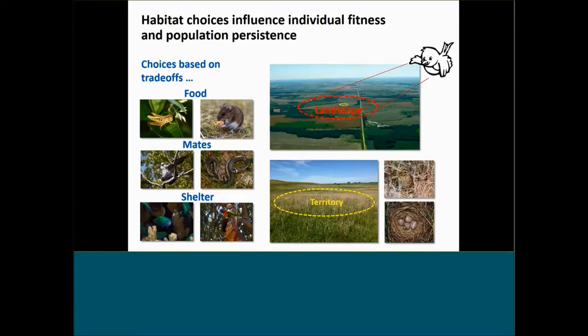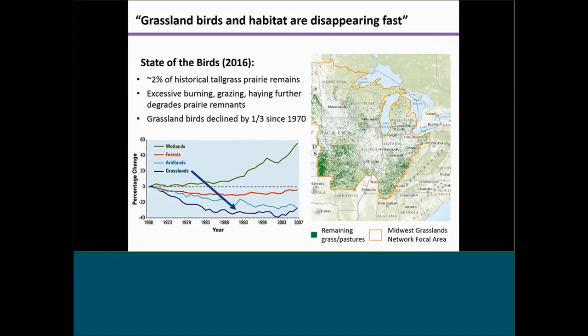All the while, overlooking choices that animals have already made at broader spatial scales while assessing landscapes and deciding where to settle. I'm really interested in understanding how species perceive and respond to this broader-scale landscape heterogeneity. There's an urgent need to understand this in North America's grasslands because they're changing so rapidly. The tallgrass prairie represents the most altered ecosystem in North America — about 2% of its historical extent remains — and grassland birds have declined more rapidly than any other guild of birds in North America.